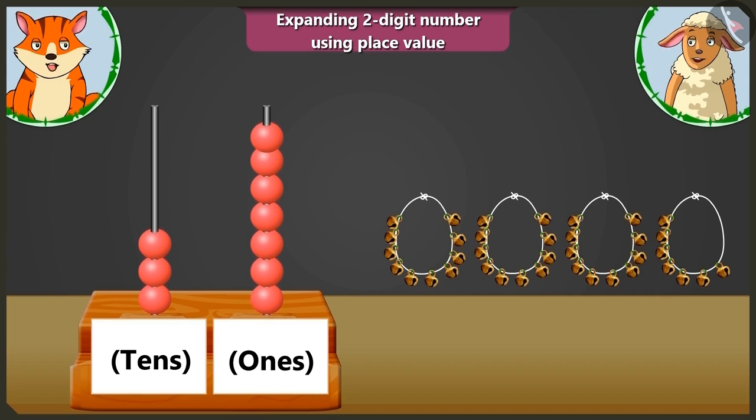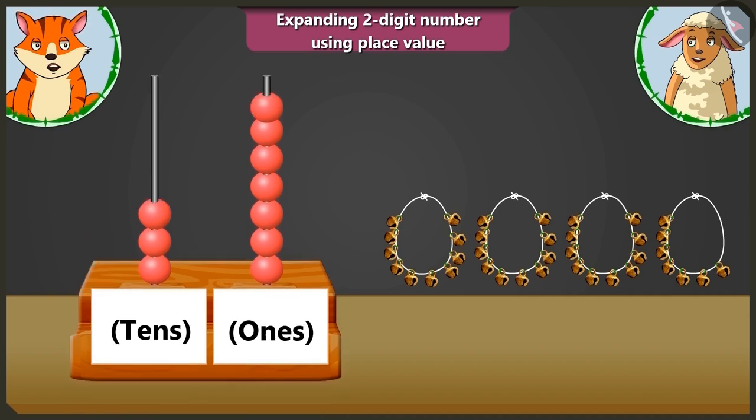Look, on this abacus, here in the tens box, there are one, two and three beads available. So we will write that first.